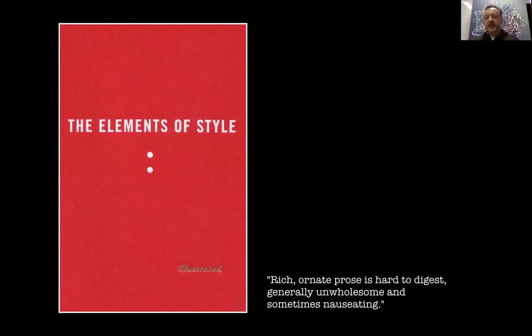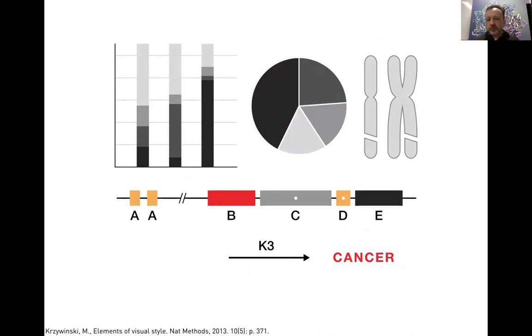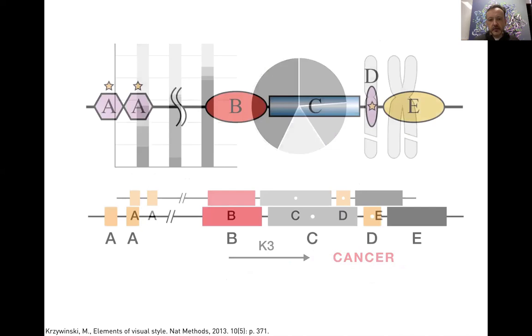I beg you to constrain yourself when you are drawing things. Read Strunk & White — although slightly old, it makes good points that rich and ornate prose is hard to digest, unwholesome and nauseating. None of the elements in a figure need to have the degree of decoration and gaudiness they sometimes do. Cancer is a disease that is not a lottery jackpot winner — you do not need accentuating stars. Use as little ink as possible, as little color as possible. Constrain yourself so that your figure can accommodate more information if required.